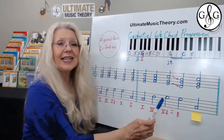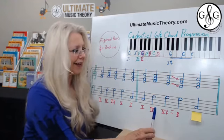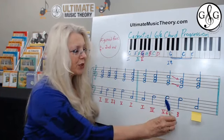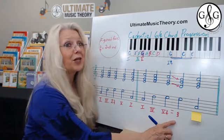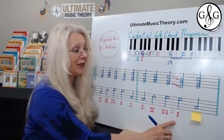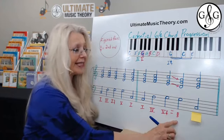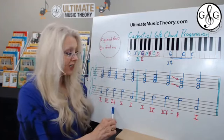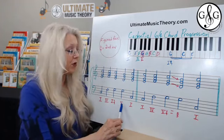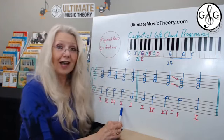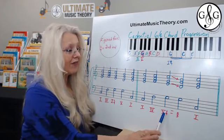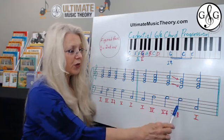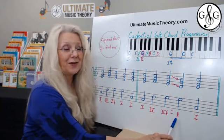It's like a little baroque bling — the 6-4 chord resolves down to the five-three, and it sounds beautiful. This then moves into the one chord. When you see the 5-6-4 chord, it will always move to the root position of the five chord. That's the rule for writing the cadential 6-4 chord progression.